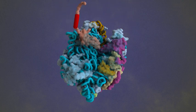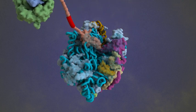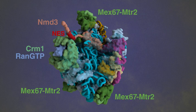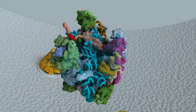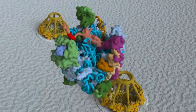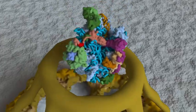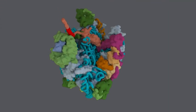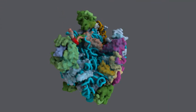In order to transit to the cytoplasm, nuclear export machinery is recruited, including the nuclear export adapter NMD-3, the general nuclear export receptor CRUM-1, which is bound to RAN-GTP, and additional transporter factors, including MEX-67-MTR-2. These factors together mediate the efficient export of the huge pre-60S particle through the nuclear pore complex.